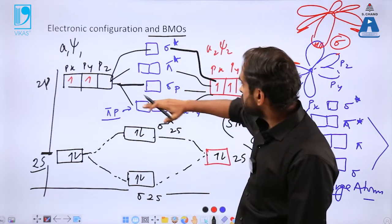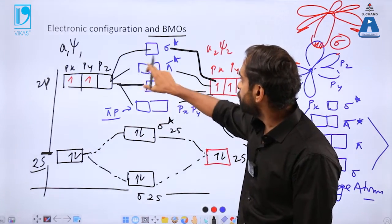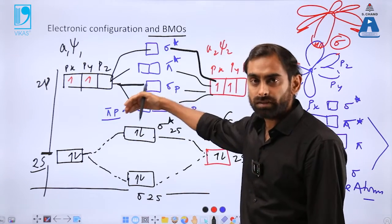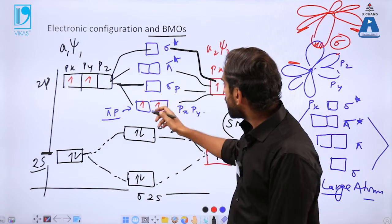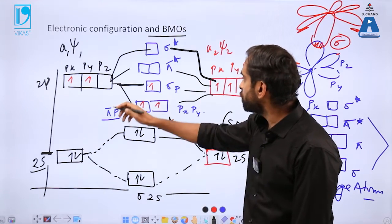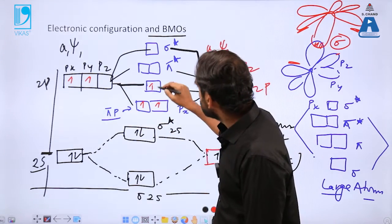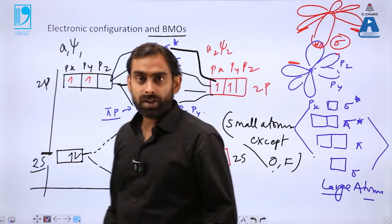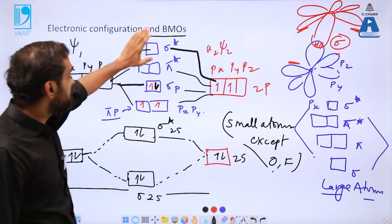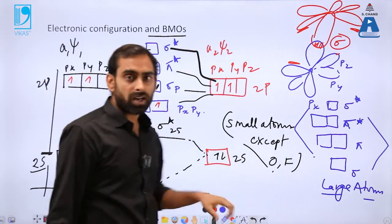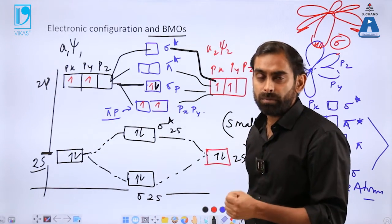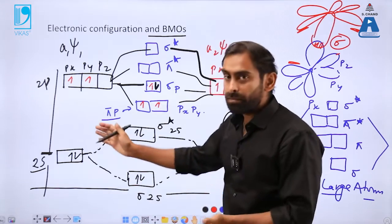From the 2p subshell there are two electrons per atom, giving four electrons total to fill across the six available molecular orbitals. Filling starts at the lowest energy levels first. These four electrons fill into the pi bonding and sigma bonding molecular orbitals and will not move into the higher anti-bonding molecular orbitals unless the bonding orbitals are completely filled. This was a hypothetical example to illustrate the general principle.